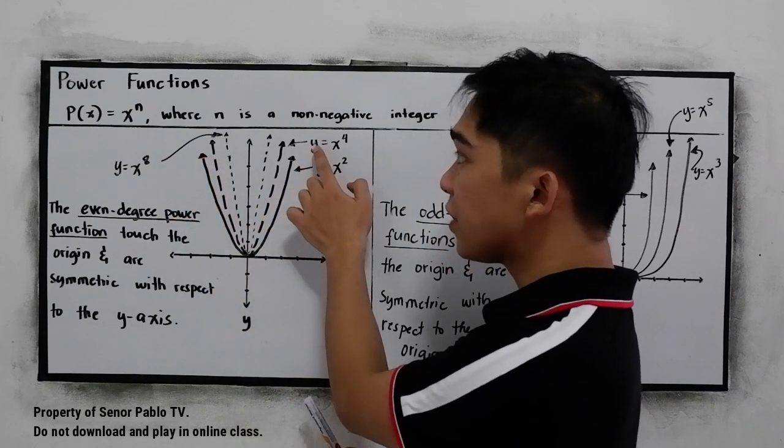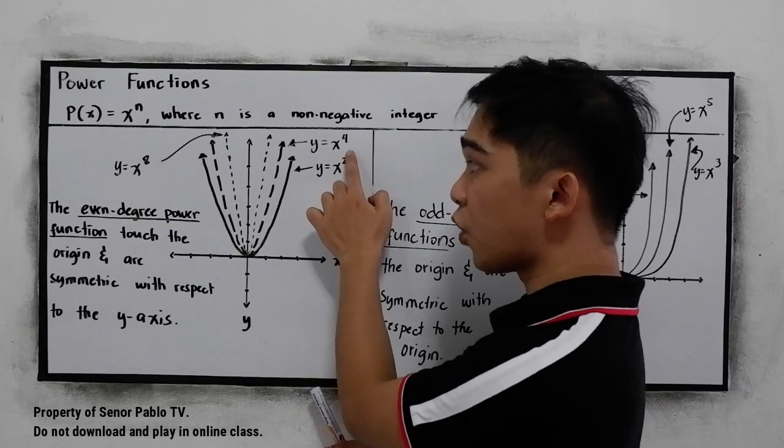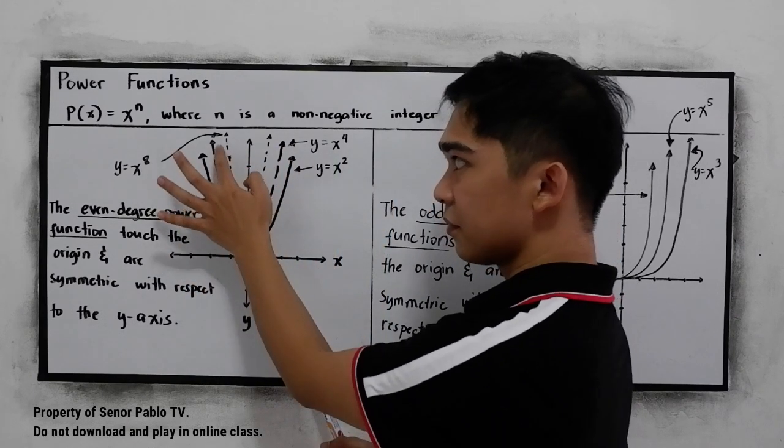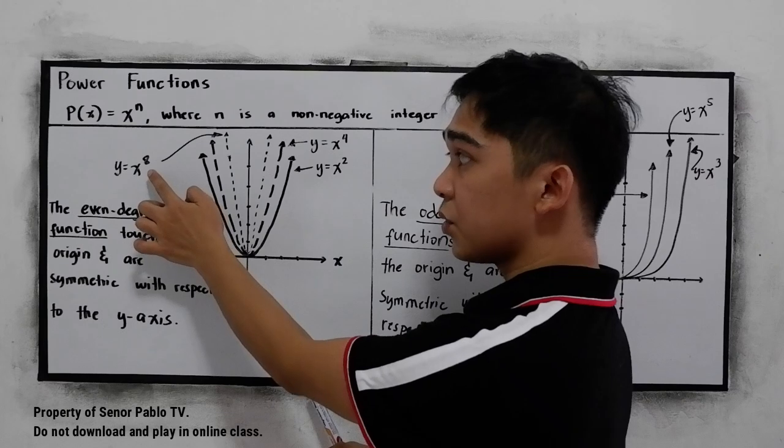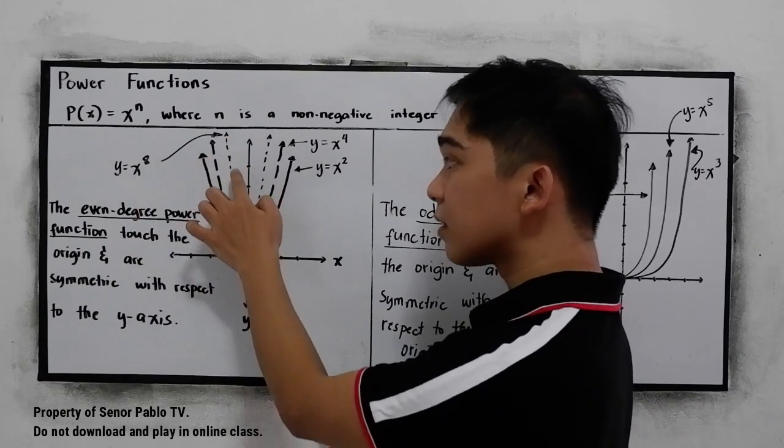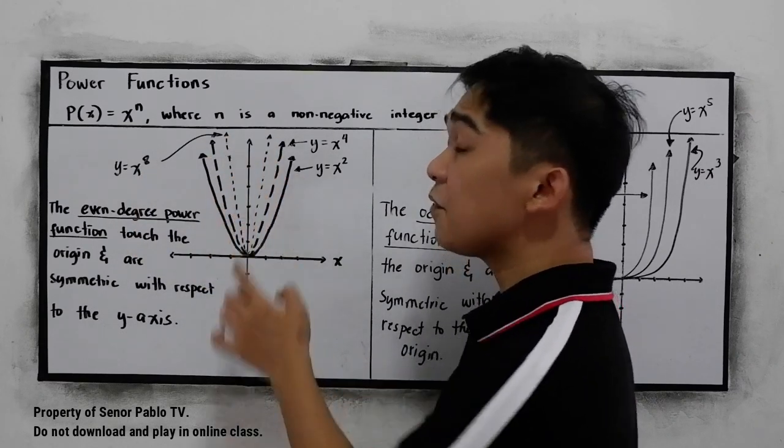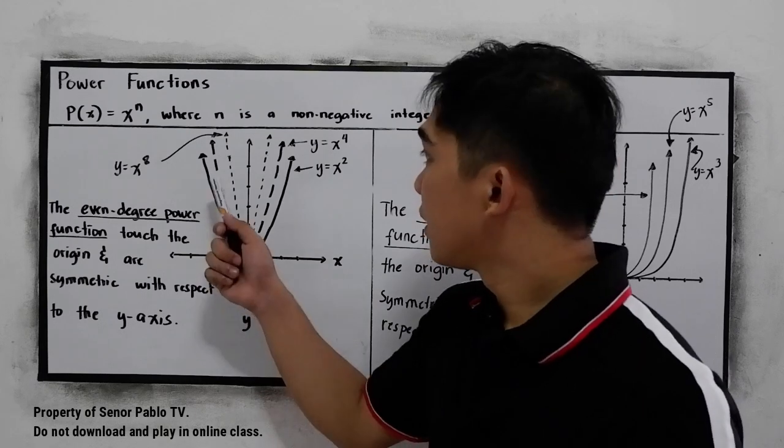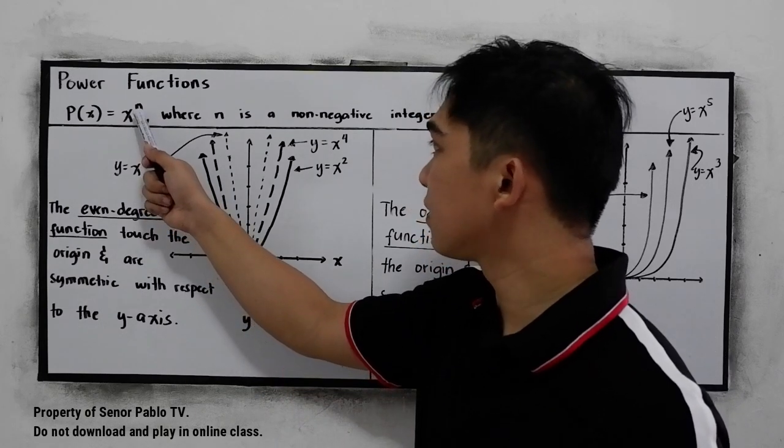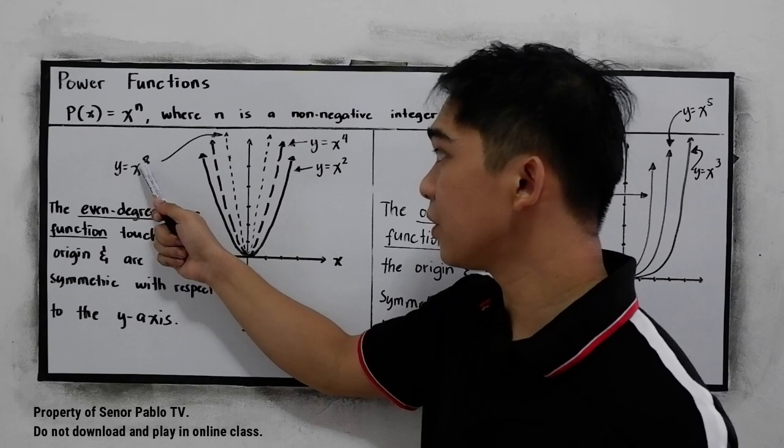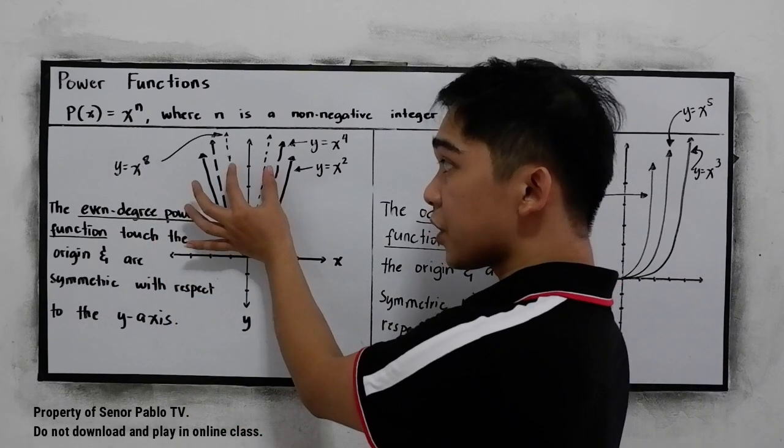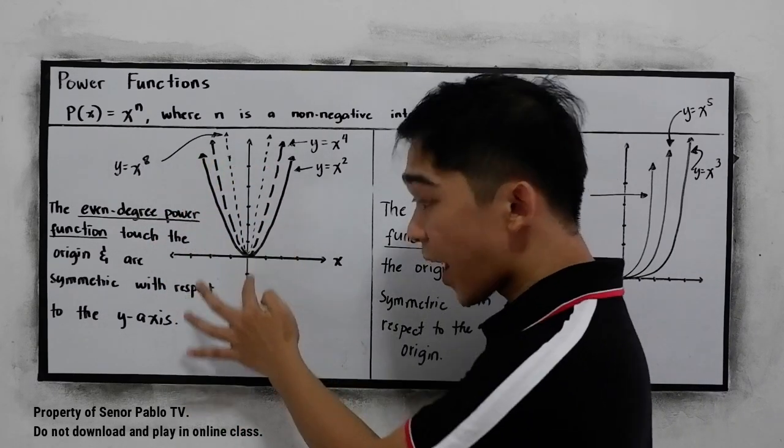And we also have here y = x^4. So this is our graph. And y = x^8. If you notice, if our n has a bigger value, then it will draw closer to our y-axis.